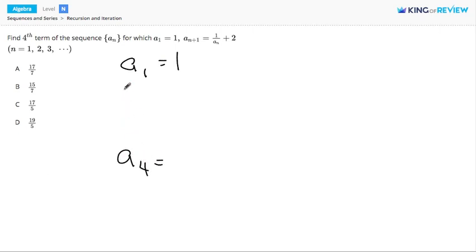Let's work our way up to that by starting with a2. If n plus 1 is equal to 2, then n is equal to 1. So this will be 1 over a1 plus 2. We know that a1 is equal to 1, so this is 1 over 1 plus 2. 1 divided by 1 is 1, and 1 plus 2 is 3.